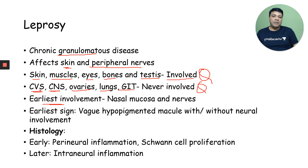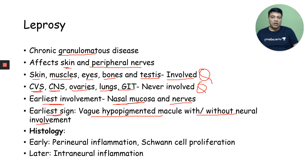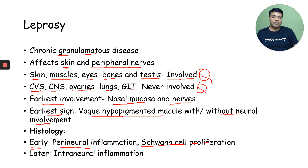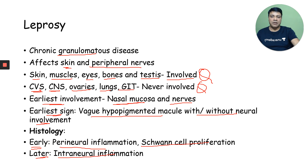The earliest involvement will be of nasal mucosa and nerves. The earliest sign will be a vague hypopigmented macule with or without neural involvement. Histology in the early stage will show perineural inflammation and Schwann cell proliferation — that is, inflammation around the nerve bundles. In a later stage, it will be intraneural, with inflammation going deeper into the nerve bundle.